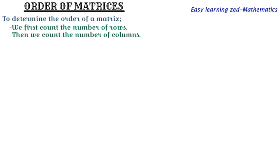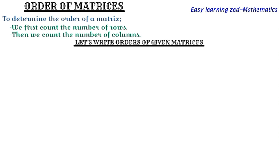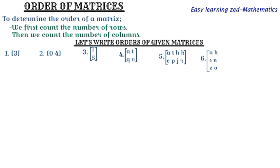Now we are going to write the orders of the given matrices. These are the matrices we need to identify their order.